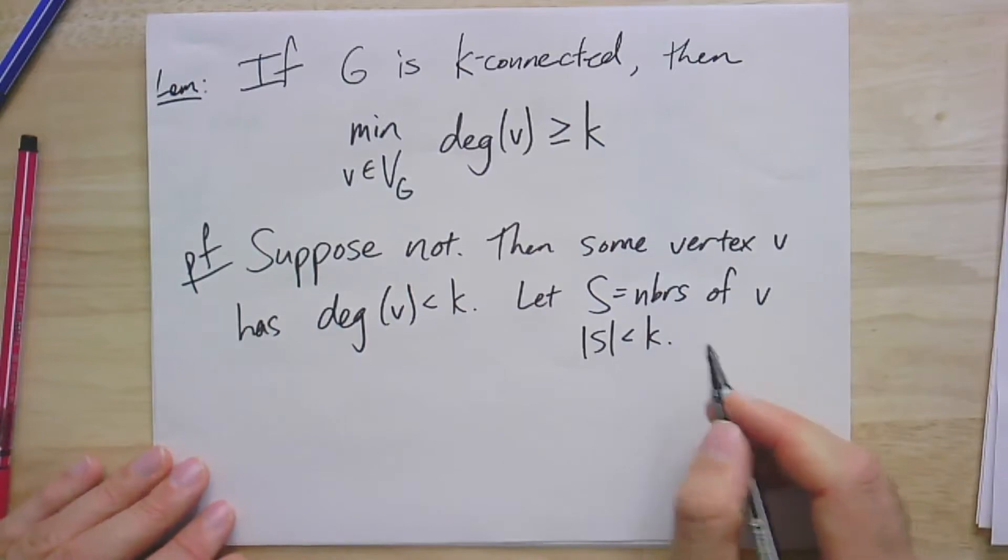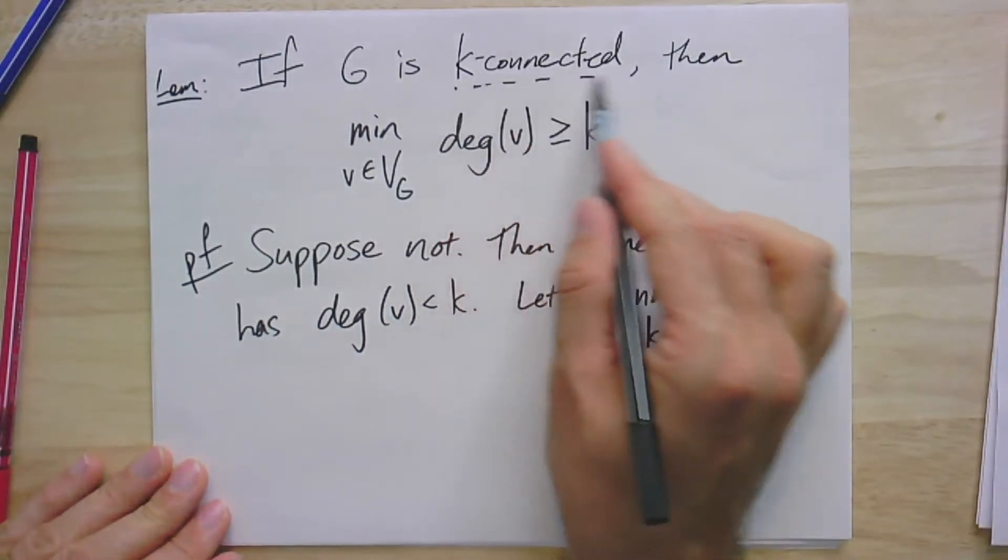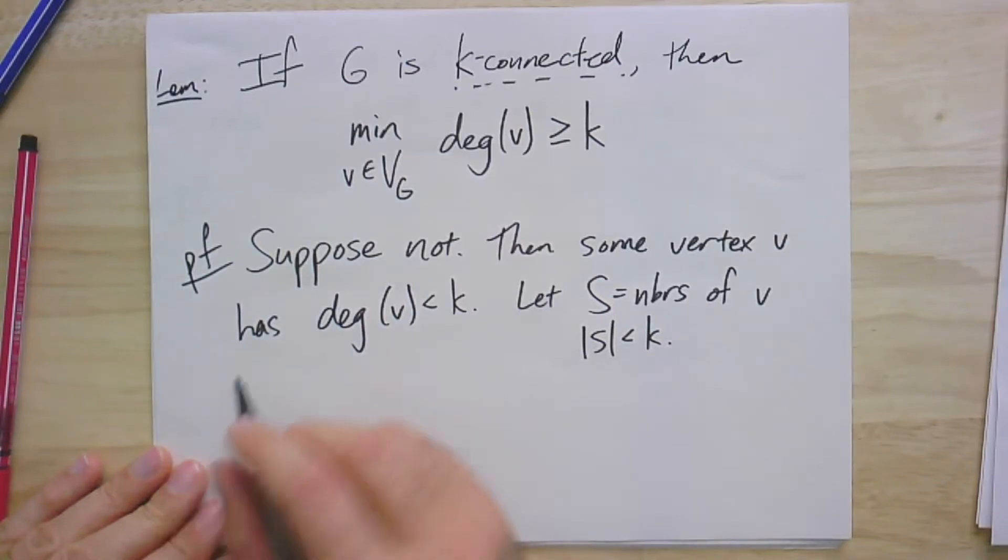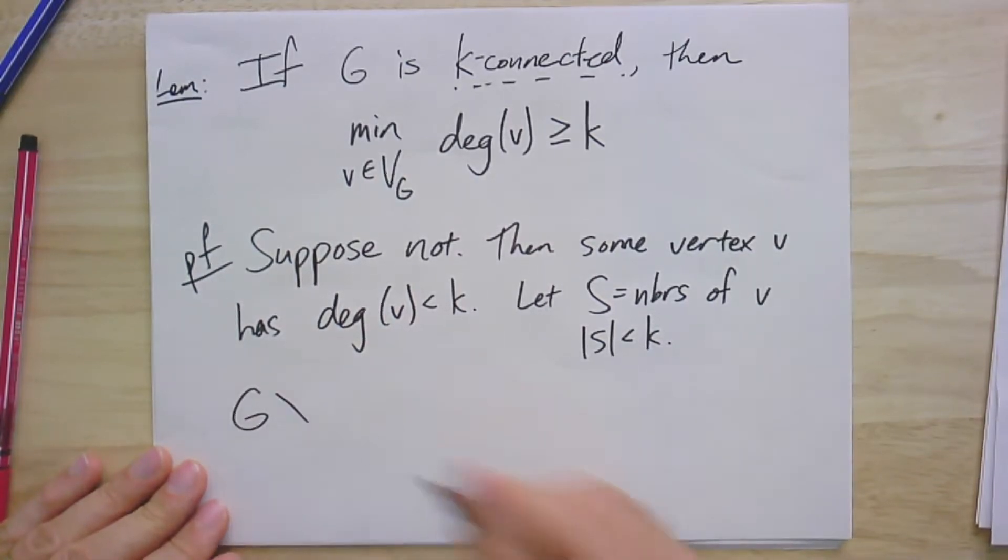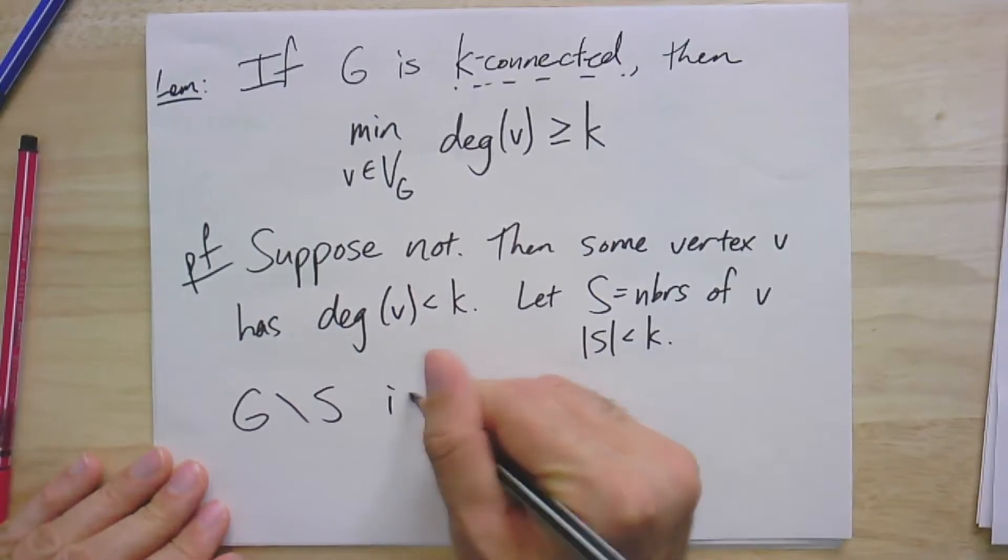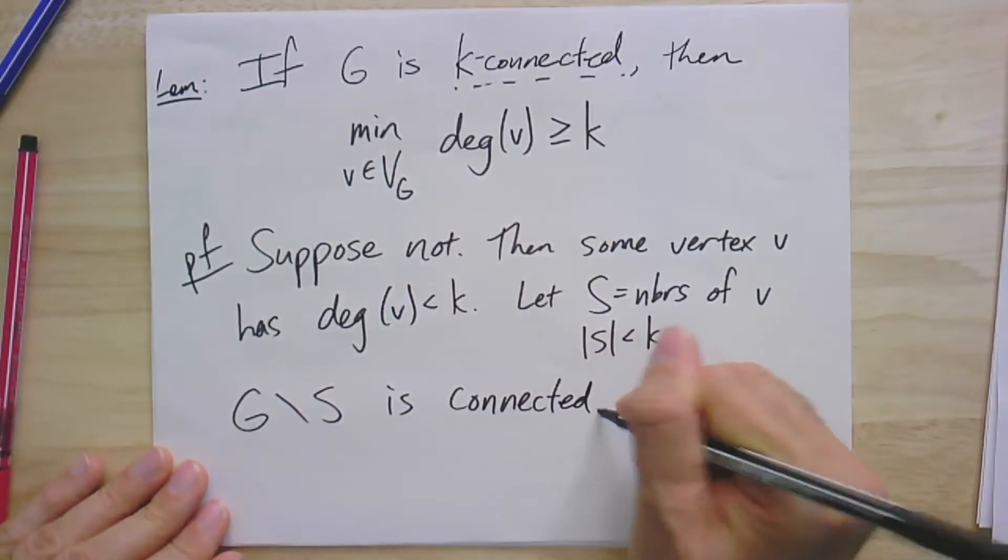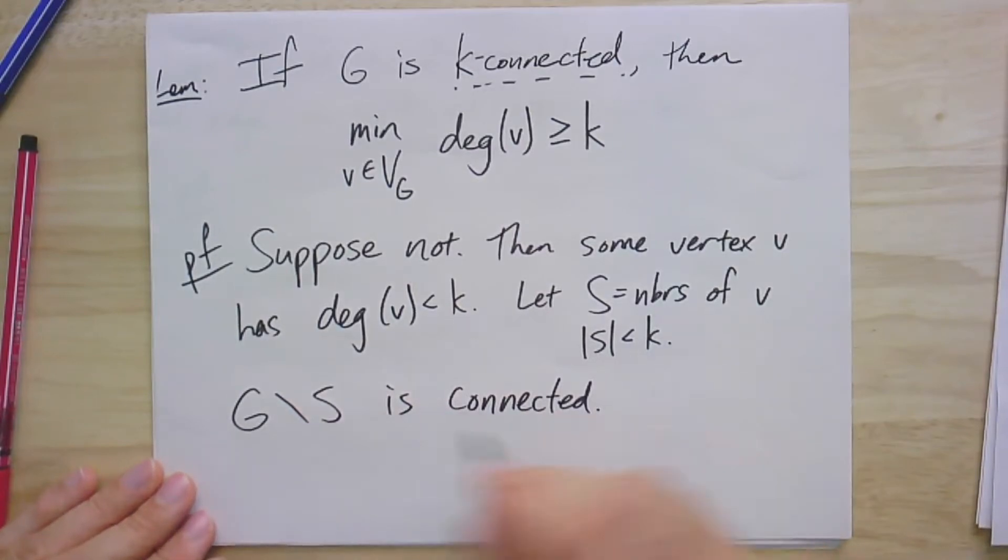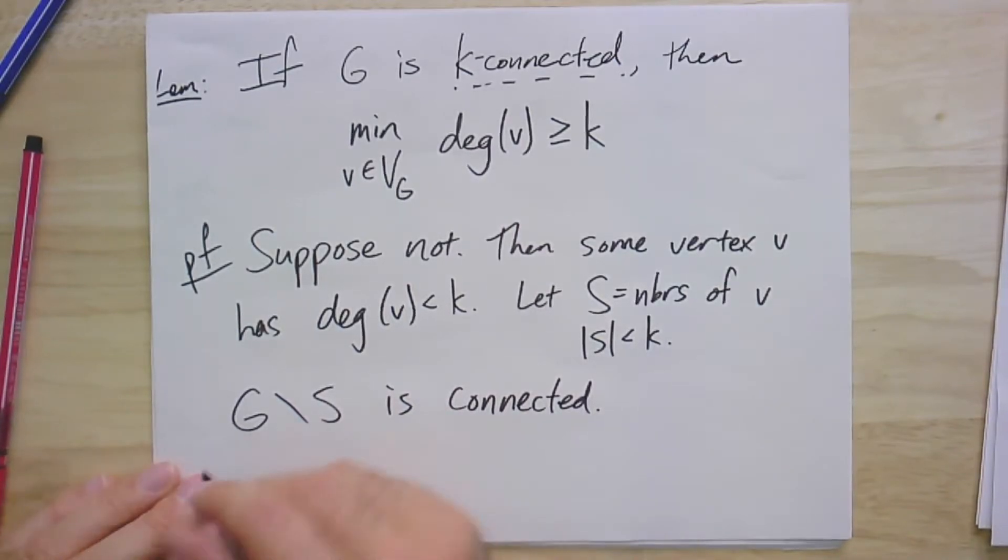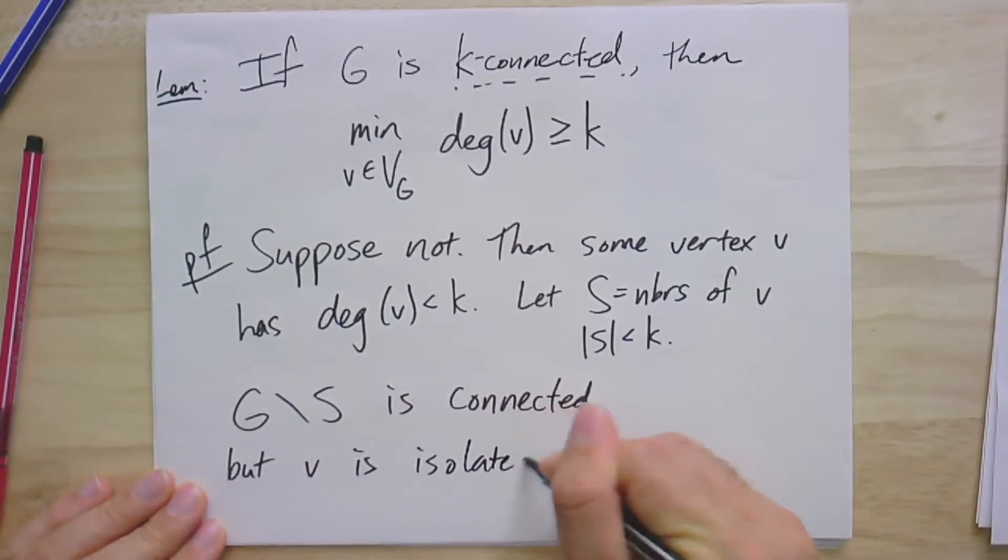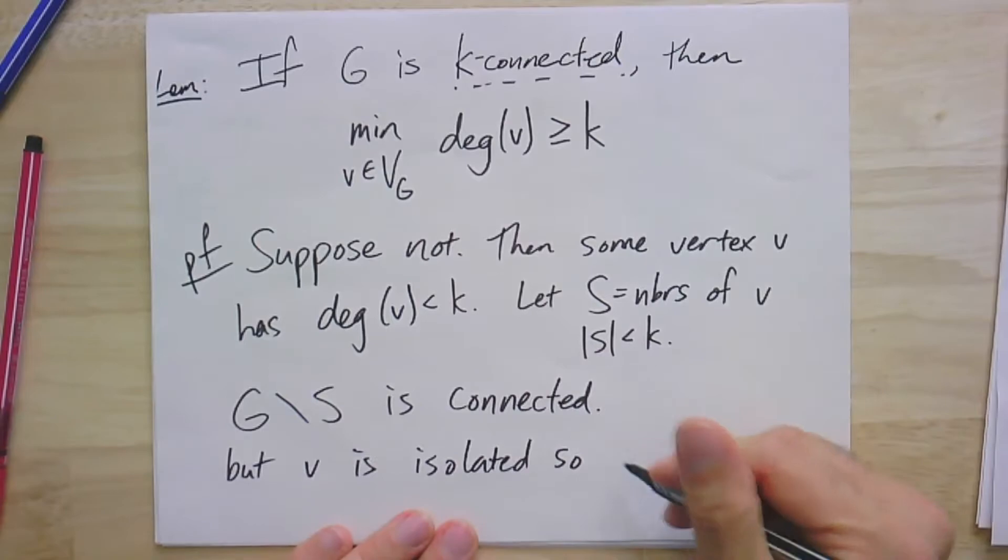However, by the definition of K connected, removing a subset of size less than K should leave a connected graph. So, that means that G minus S is connected. However, there are no paths from V to any other vertices. So, we get a contradiction.